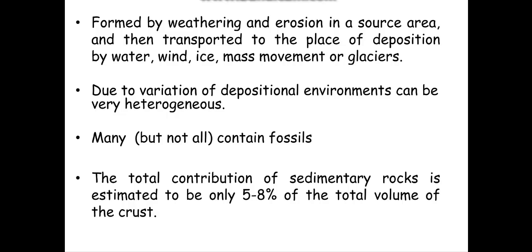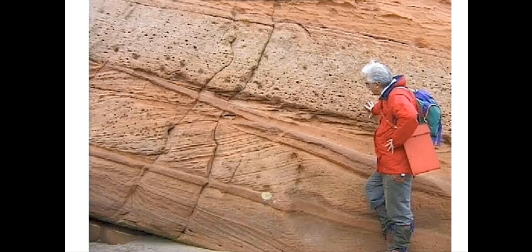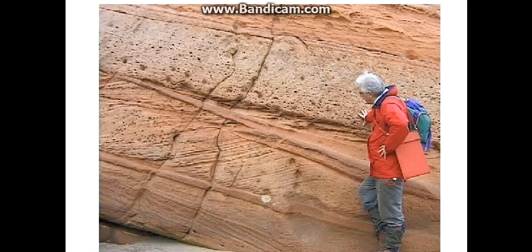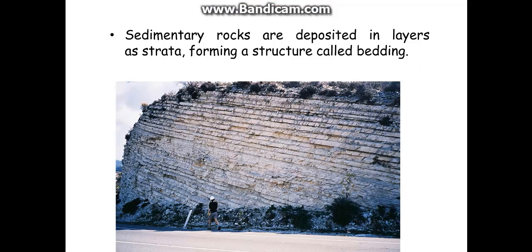Sedimentary rocks contain fossils. The total contribution of sedimentary rock is estimated to be five to eight percent of the total volume of the Earth's crust. You can see in this picture a rock showing different layers, different colors, and different formations — some more horizontal, some more inclined. Sedimentary rocks are deposited in layers and strata, forming a structure called bedding. You can see different beds lying above each other.